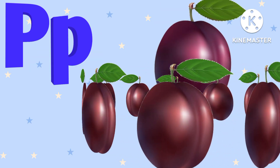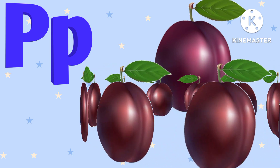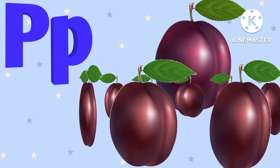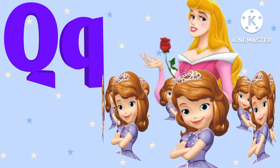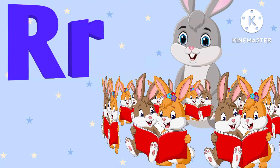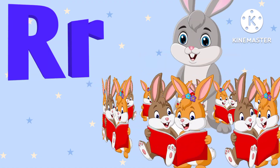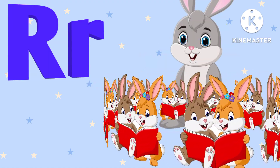P is for plum. P. Plum. Q is for queen. Q. Queen. R is for rabbit. R.